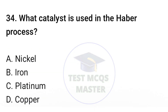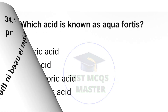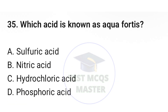Question number thirty-four: what catalyst is used in the Haber process? The correct option is B, iron. Question number thirty-five: which acid is known as aqua fortis? The correct option is B, nitric acid.